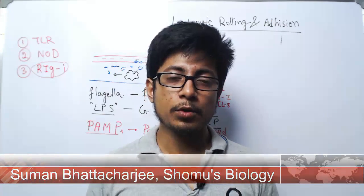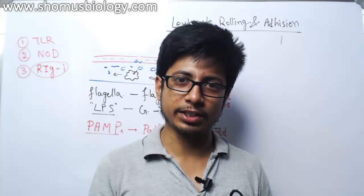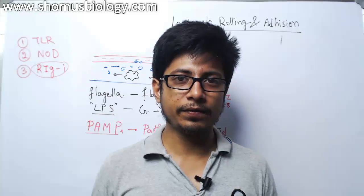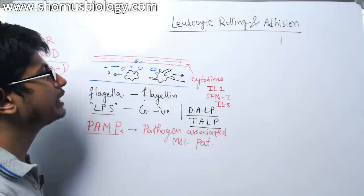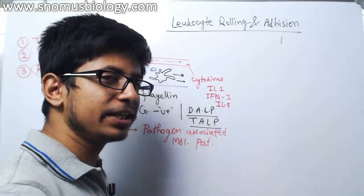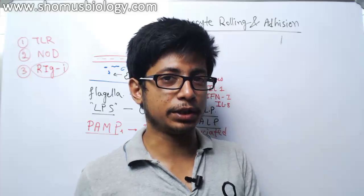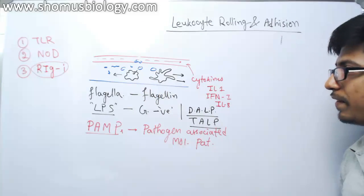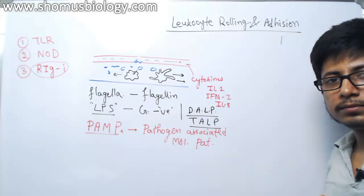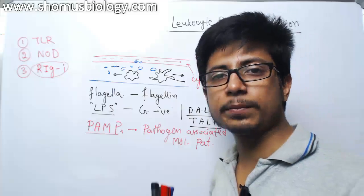Hello friends, welcome to another video tutorial from Sromos Biology. We have been talking about the immune system and immunology lecture series, and this is the 5th video. In this video we want to talk about leukocyte rolling, adhesion, and release of leukocytes from the vessel into the infected area of the tissue, which is leukocyte extravasation. Remember, as this is a series of videos, it will be very beneficial to watch the previous videos.